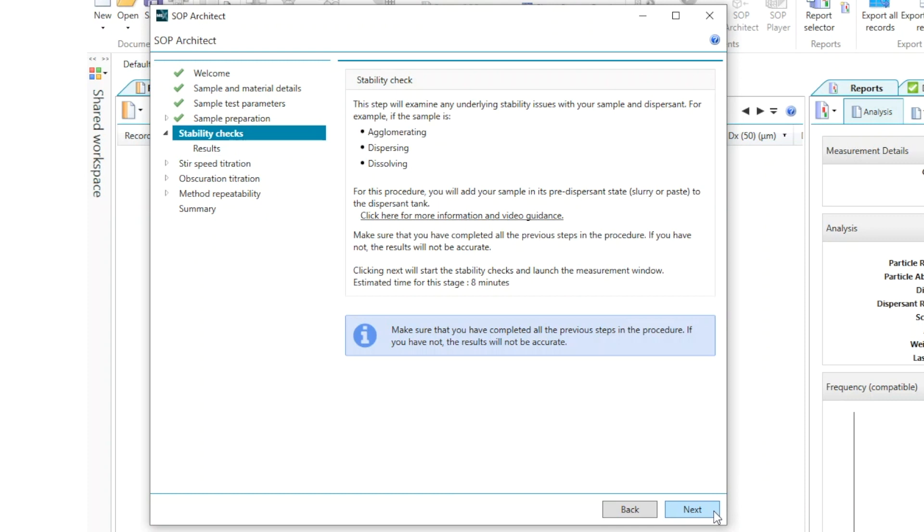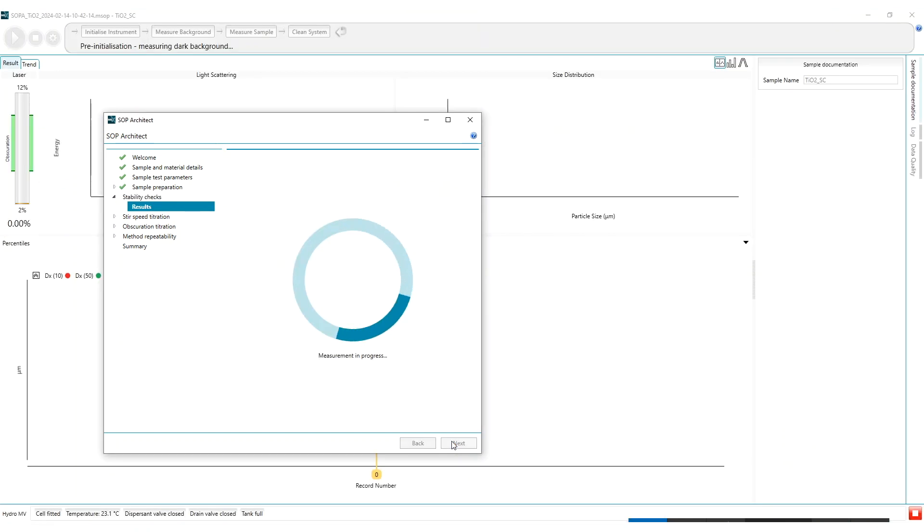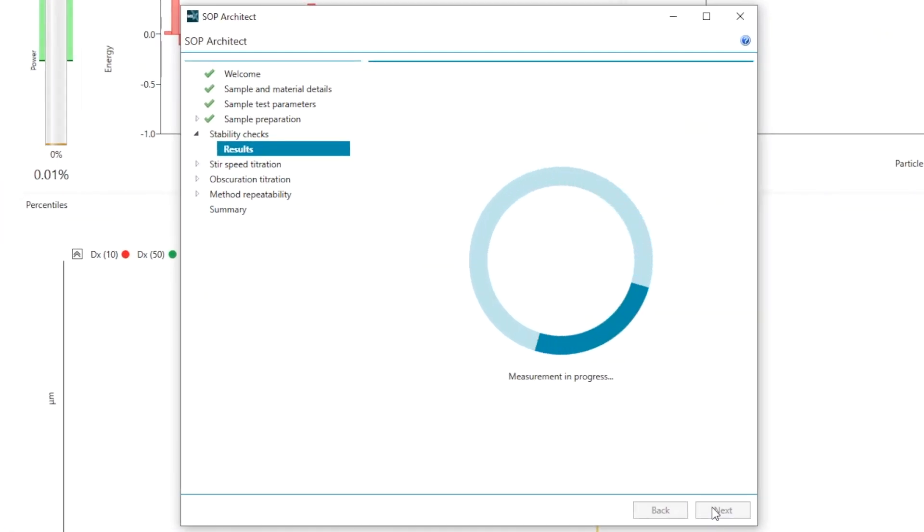So I will now carry out the stability check looking at this titanium dioxide sample in water. By clicking next we'll now open up the measurement manager window where the instrument is going to carry out the initialization and a measurement of the background.